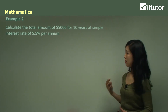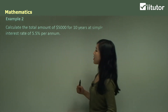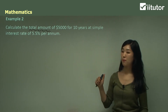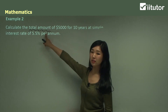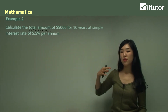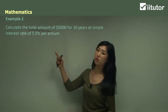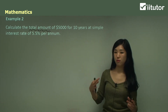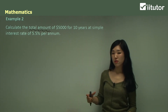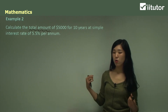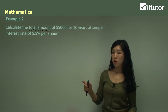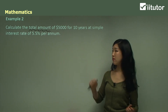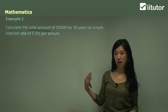This next example is a different type of question. It asks to calculate the total amount of $5,000 for 10 years at a simple interest rate of 5.5% per annum. Note the difference: previous questions asked for simple interest only, but this asks for total amount. Interest is just the amount charged on top of the principal. Total amount is interest plus your principal value — so when you borrow or invest money, you still have the principal value plus interest on top.